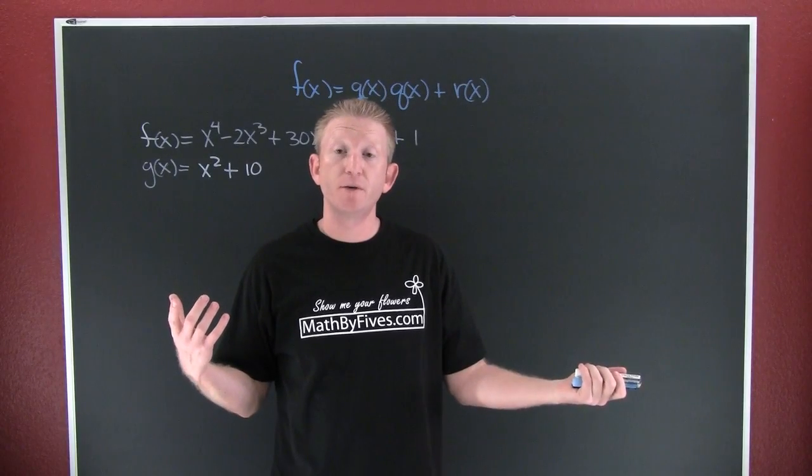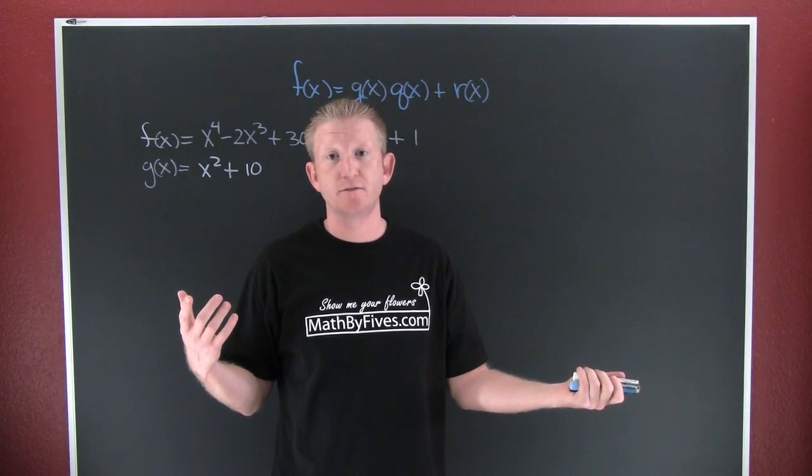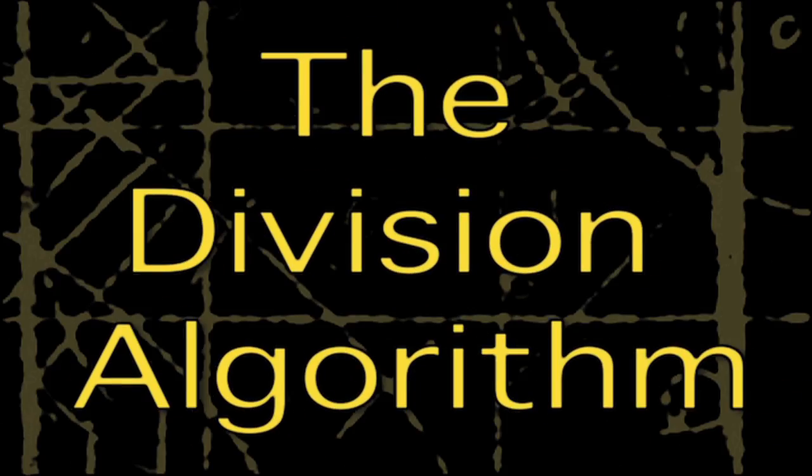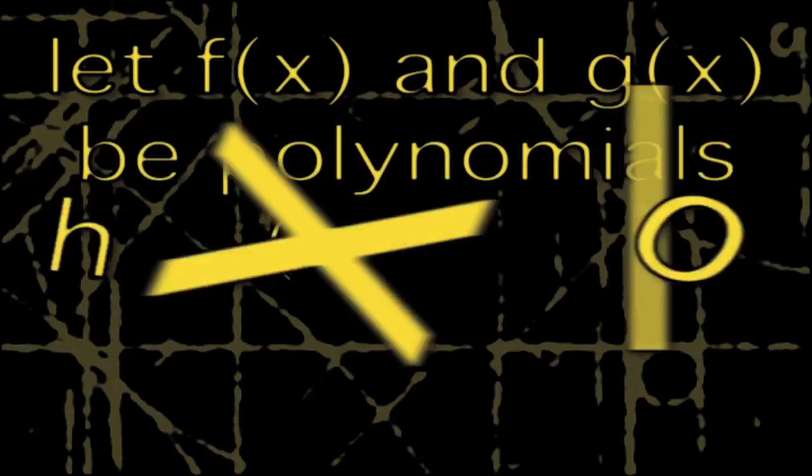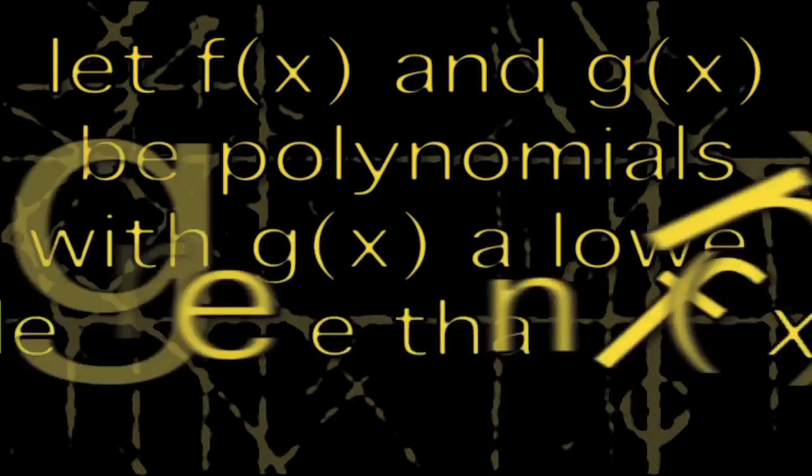The division algorithm. Before we can perform it we need a definition. The division algorithm: Let f(x) and g(x) be polynomials with g(x) of lower degree than f(x) and g(x) degree one or more.